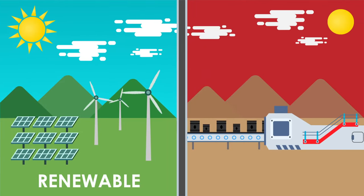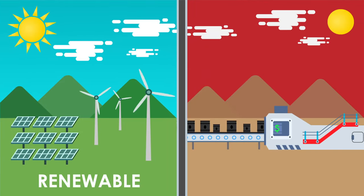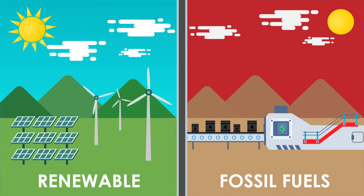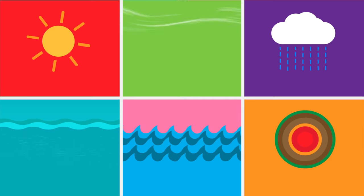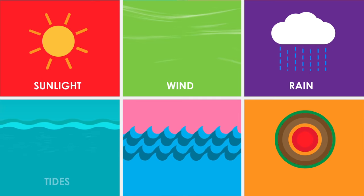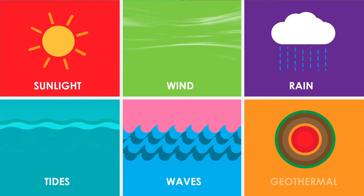Renewable energy comes from resources which naturally replenish in our lifetime, whereas fossil fuels are a one-time use resource in the human time scale. Resources for renewable energy include sunlight, wind, rain, tides, waves and geothermal heat.